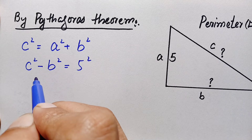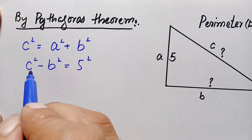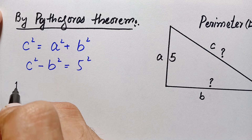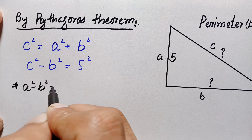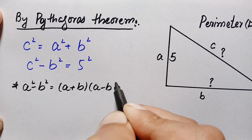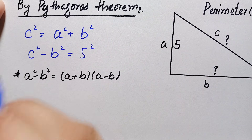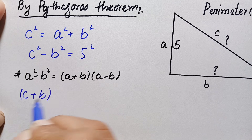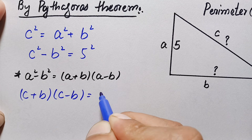On the left hand side we have c² - b², which is in the form a² - b². Here we will use the algebraic identity: a² - b² = (a + b)(a - b). Using this identity, the left hand side becomes (c + b)(c - b) = 25.